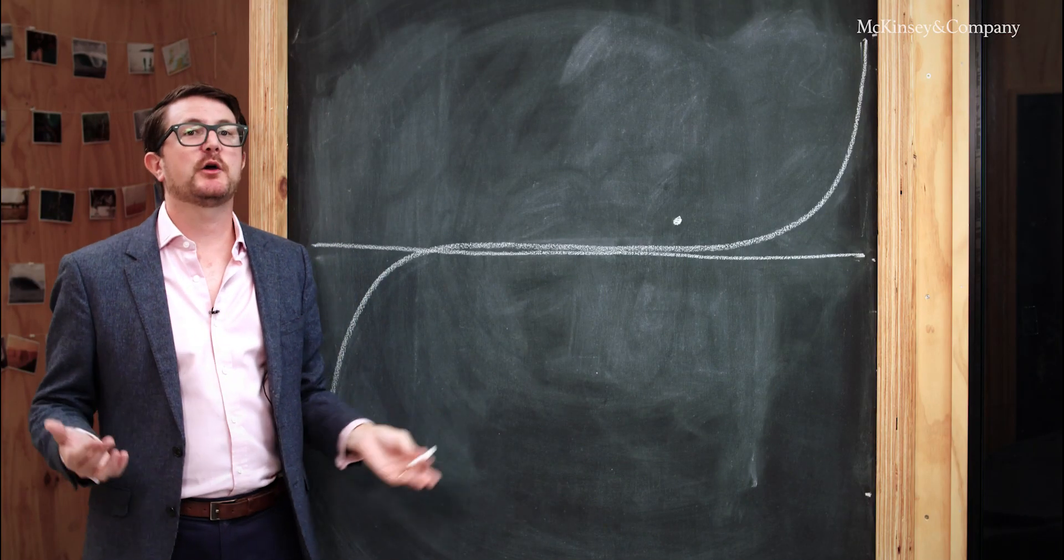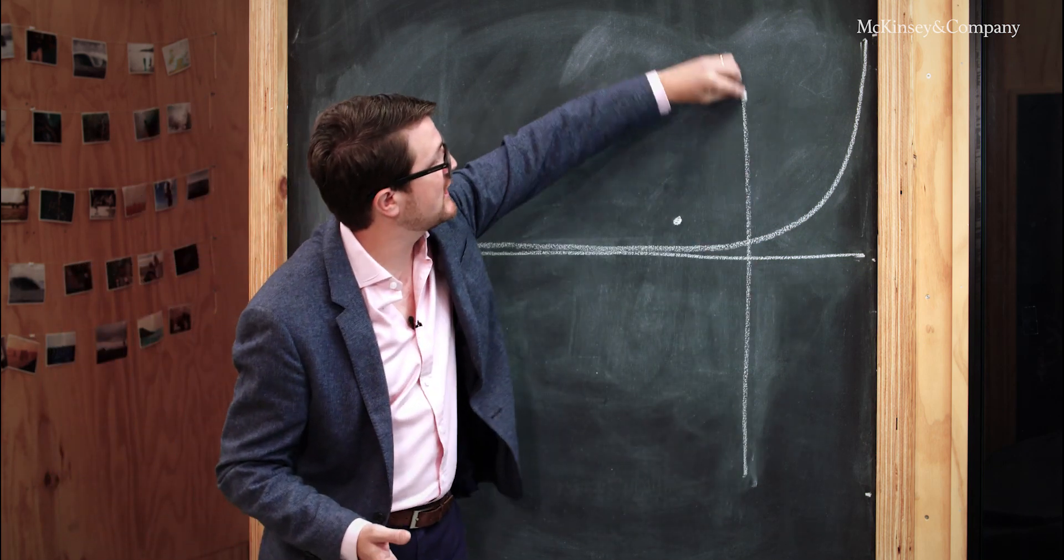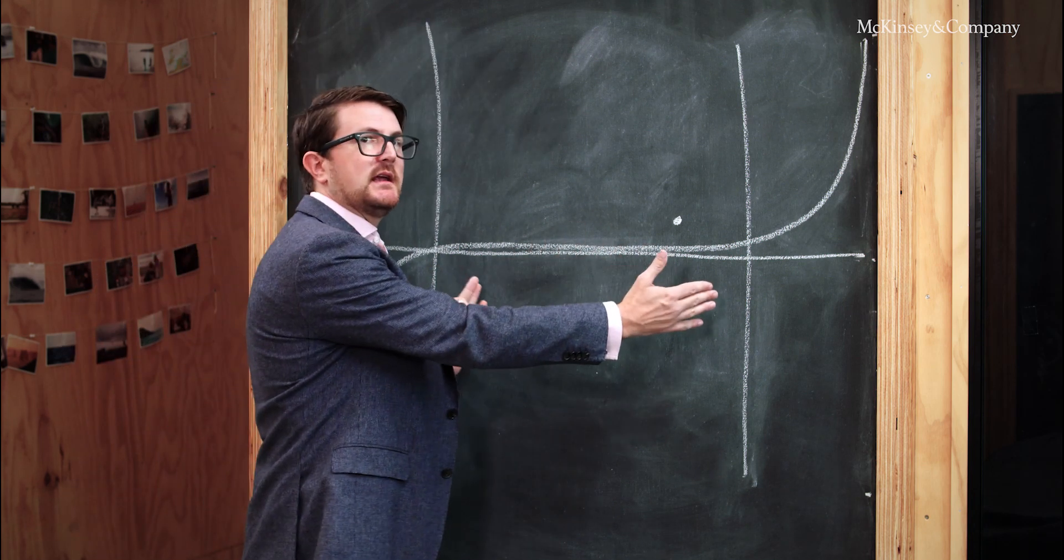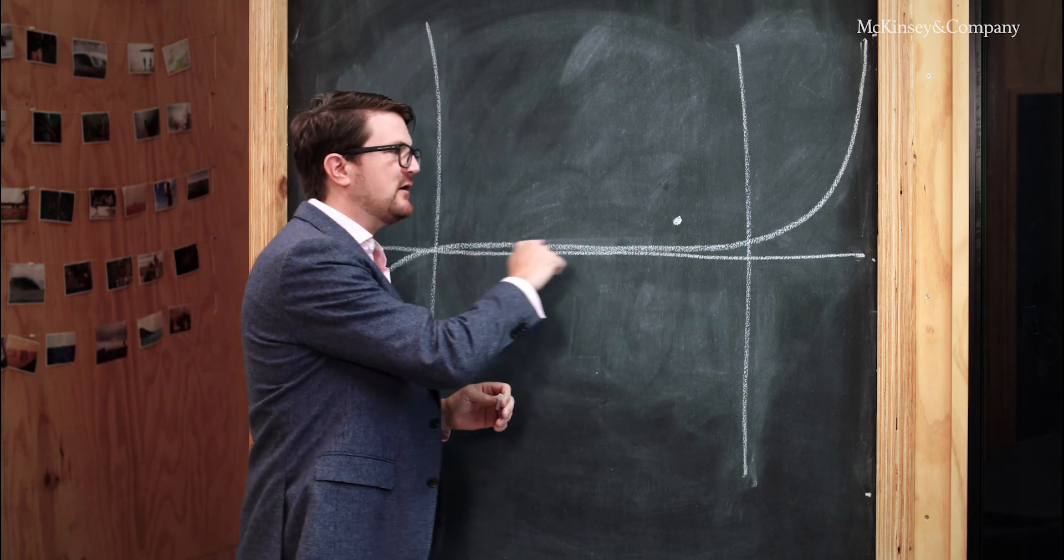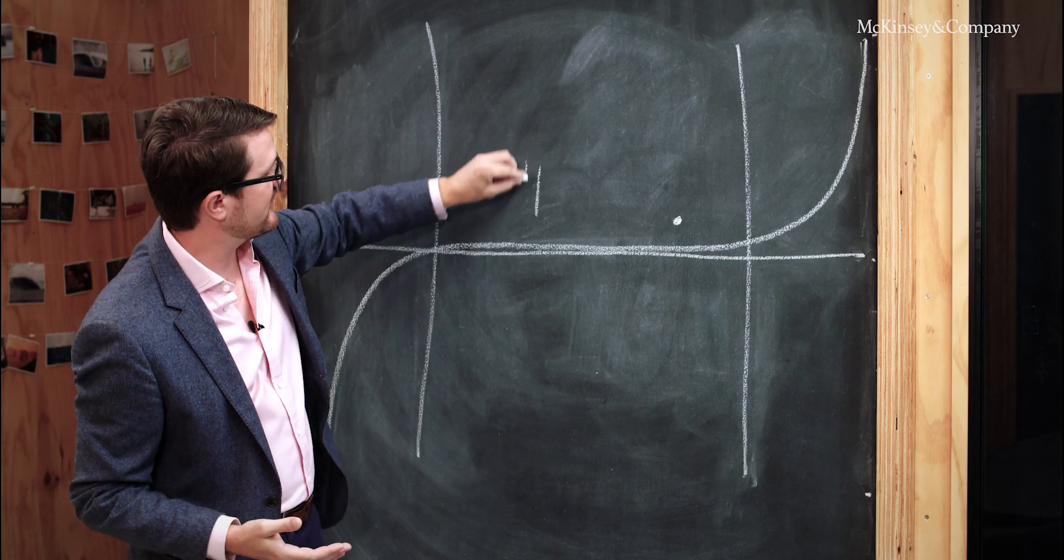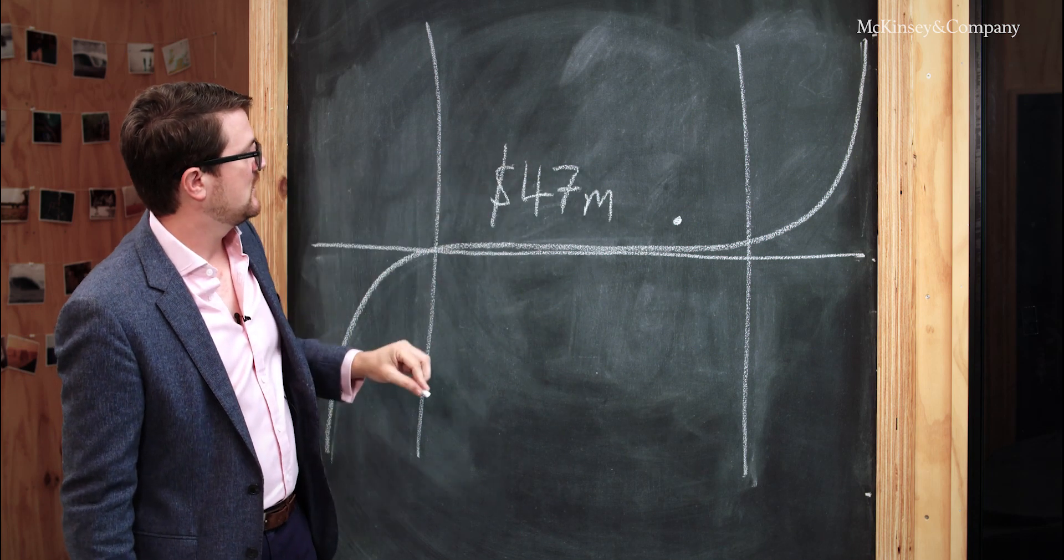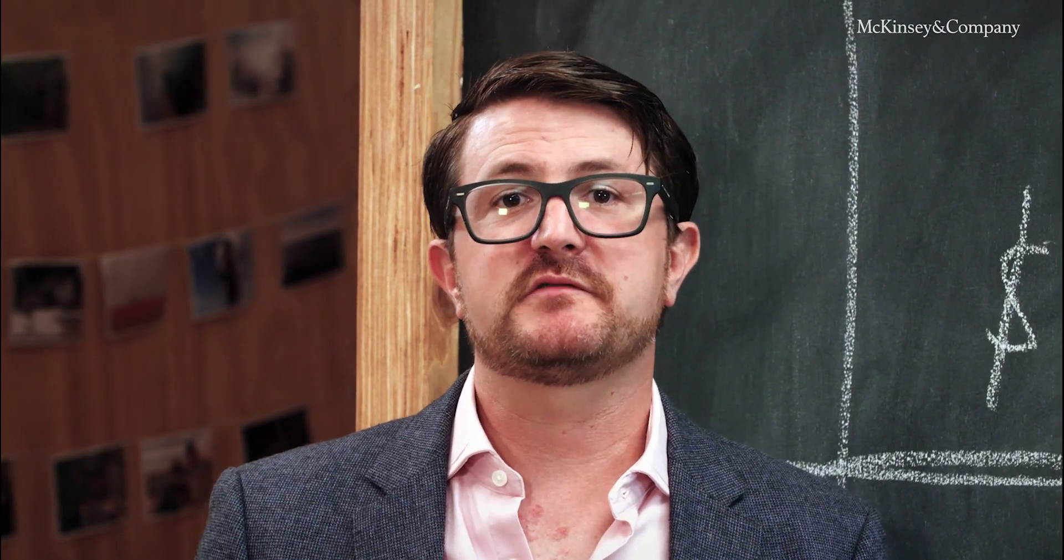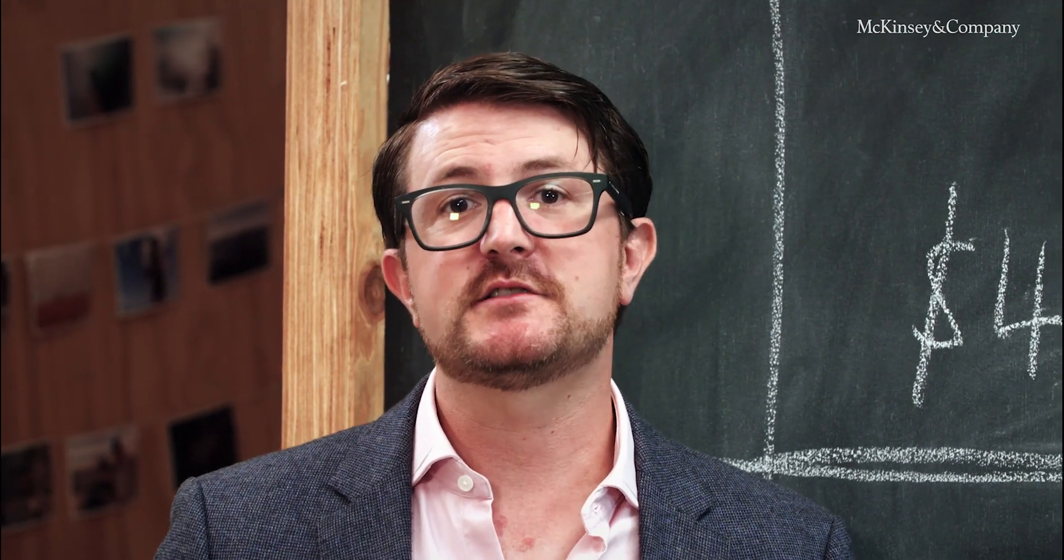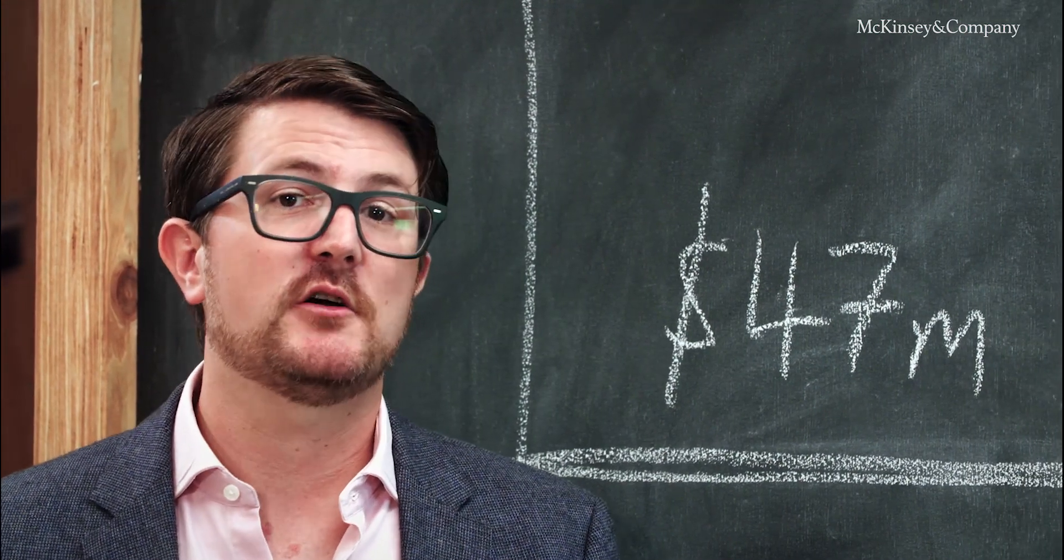We call that the power curve of economic profit. It splits into three really clear zones. You've got the middle 60 percent here where the line is pretty well, for all intents and purposes, flat. Companies in this area earn on average 47 million a year economic profit. So here, economic theory kind of proves right. The forces of competition force economic profit pretty close to zero. These companies are working really hard just to return their cost of capital.